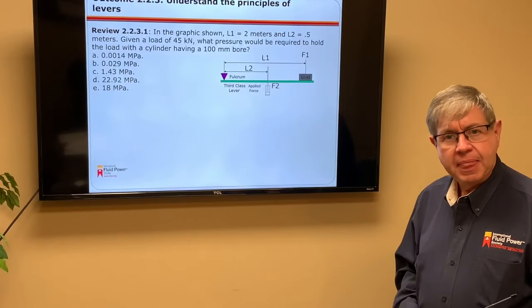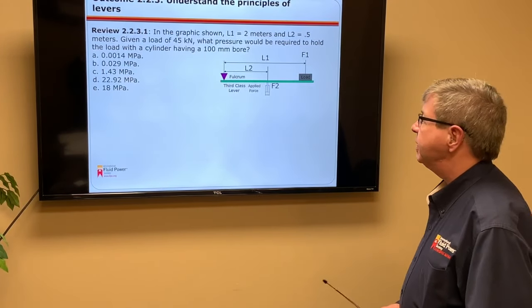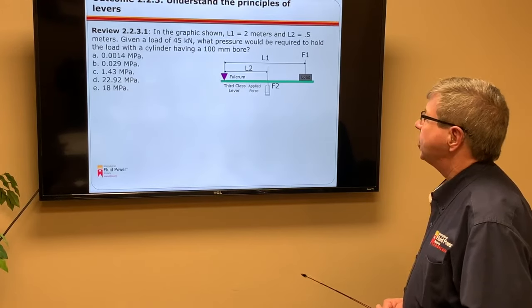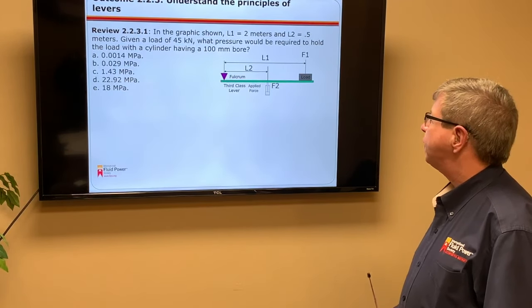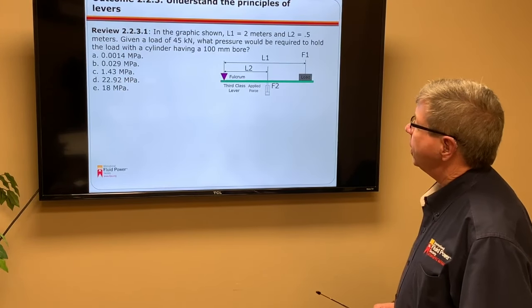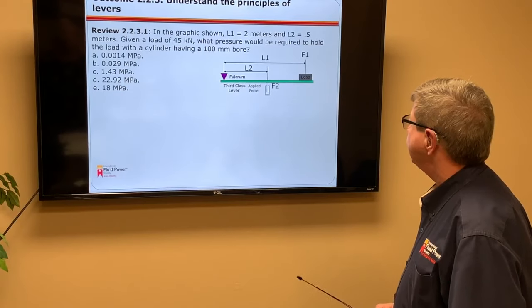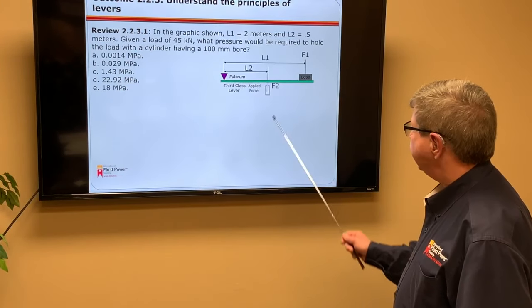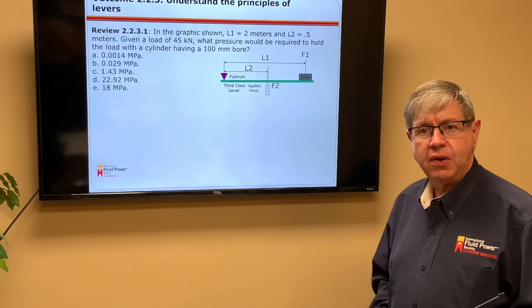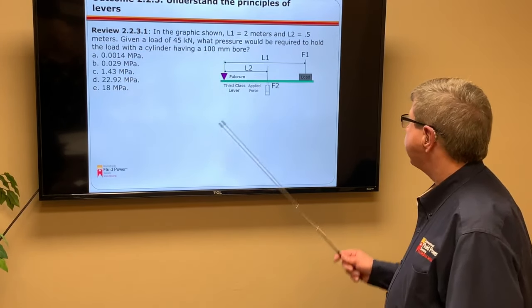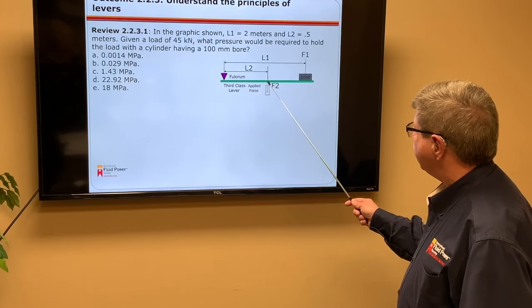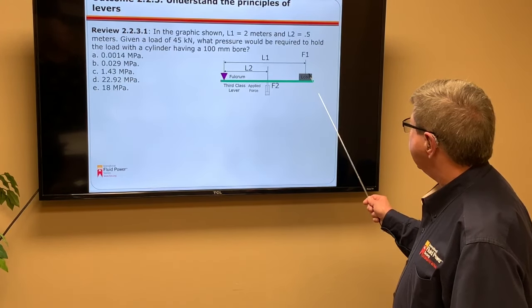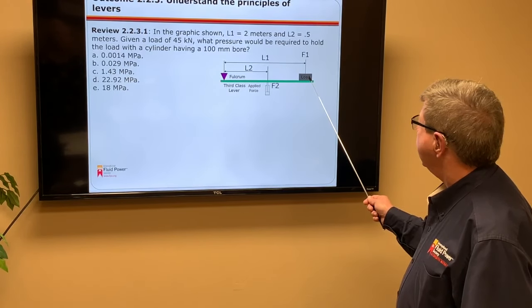Our review question sees if we can understand and utilize that information. In the graphics shown, L sub 1 equals 2 meters and L sub 2 equals 0.5 meters. Given the load of 45 kilonewtons, what pressure would be required to hold the load with a cylinder having a 100 millimeter bore? Well, first of all, I have to determine what load the cylinder must exert. We're showing in the example here that this is, in fact, a third-class lever. So the force here will be quite a bit more than the load, which is a good point to remember when checking your work to make sure you've got the correct answer.